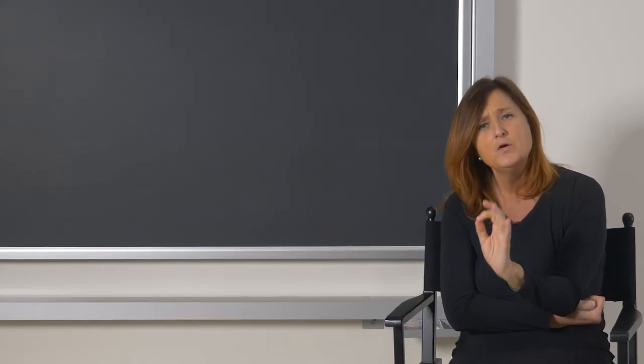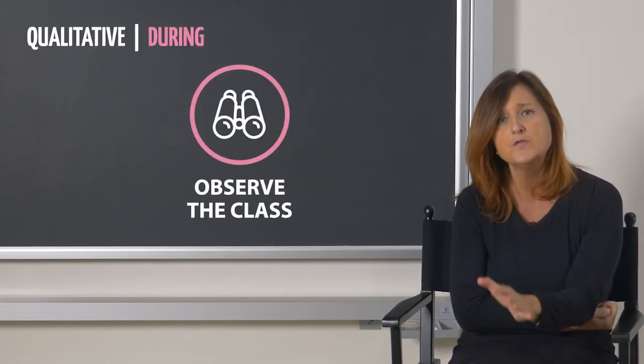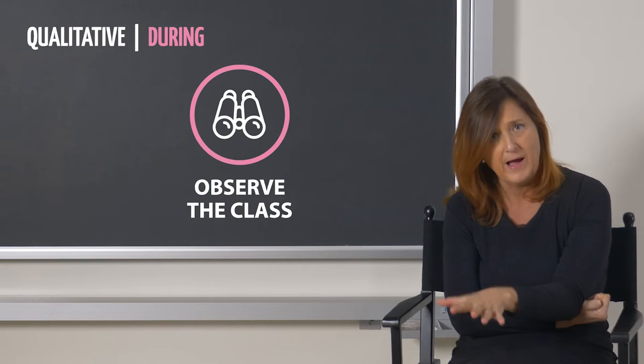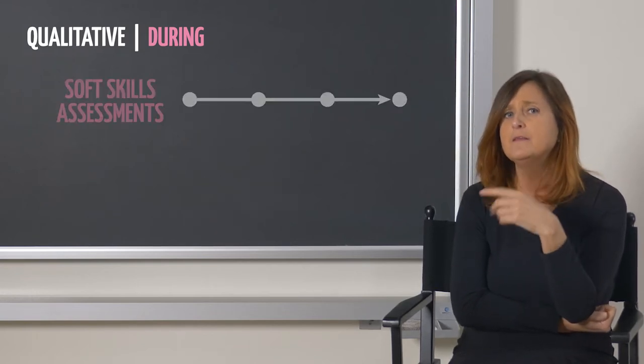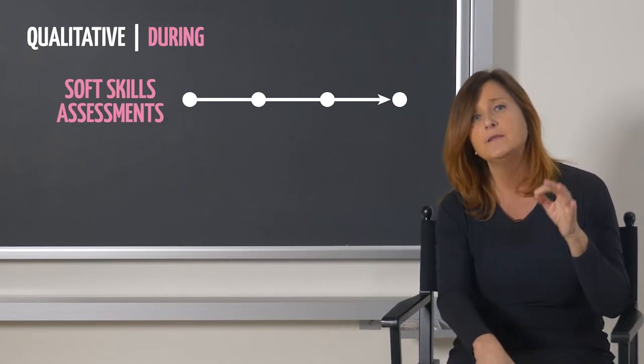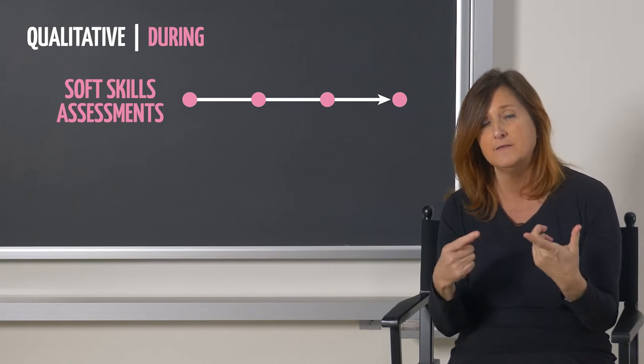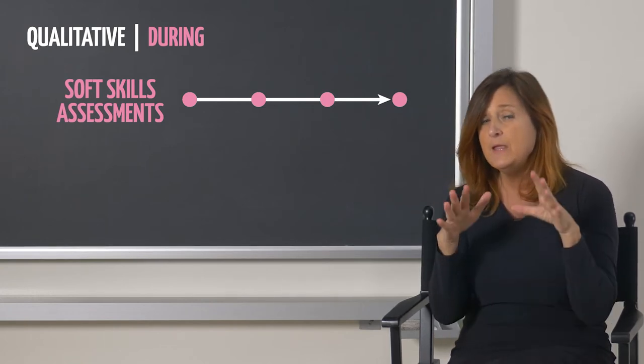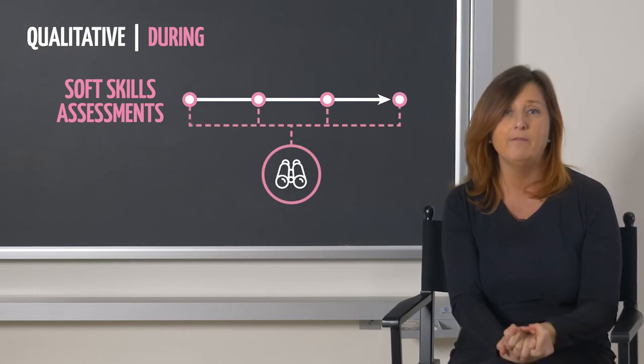The first element refers to the observation of the performance during which the soft skill is practiced. If you remember, when we talked about soft skills assessment, we put in evidence the fact that it needs to be repeated more than once in the course, in order to track the evolution of skill mastery level.